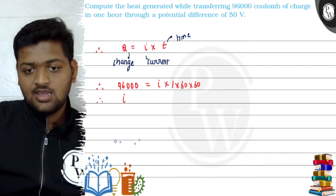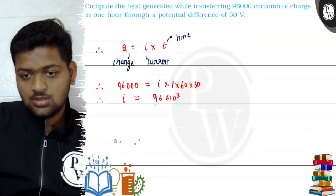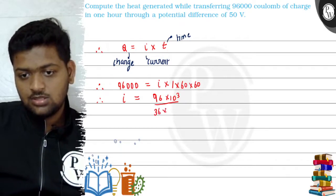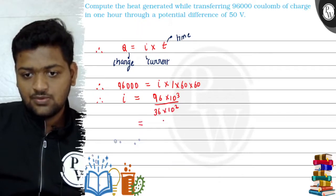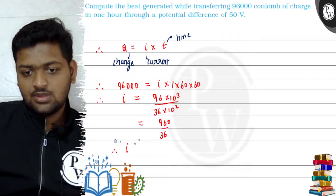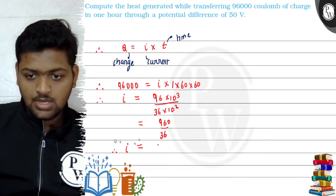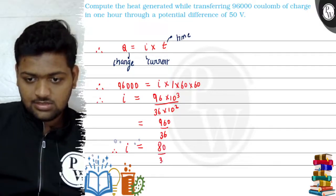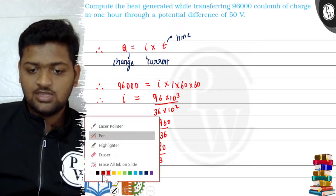Now we will find out I from this that comes out to be 96 into 10 to the power 3 by 36 into 10 to the power 2. If you solve this it becomes 960 upon 36. So the value of current I comes out to be 80 by 3. Okay, we will keep it like this so that we can solve it easily ahead.